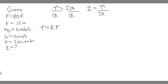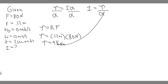Since the force is perpendicular, torque is just radius times force. The radius is 0.12 meters and the force is 80 newtons, both already in the correct units. So we do 0.12 times 80, which gives us 9.6. The torque is 9.6 newton-meters.